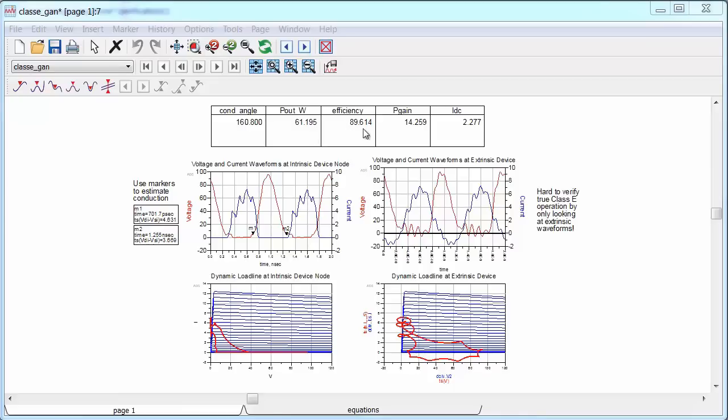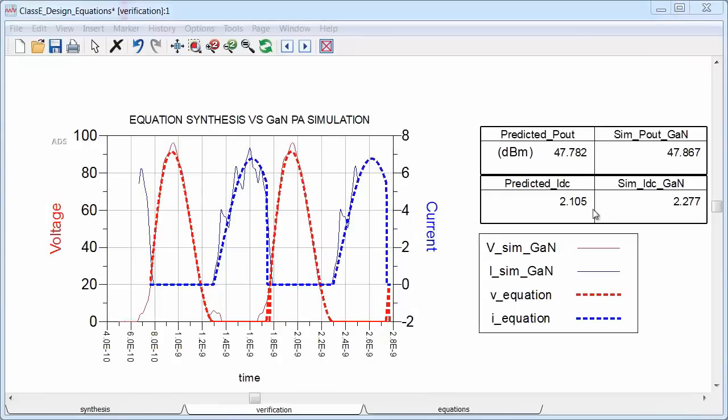So I got almost 90% efficiency at the output with good power and gain, and the waveforms, output power, DC current do match the predicted results from the synthesis tool very well. The only difference seems to be some harmonic ripple in the current, and also the voltage peak is slightly higher than predicted. And both of these are related to the realistic circuit imperfectly modeling the ideal network.